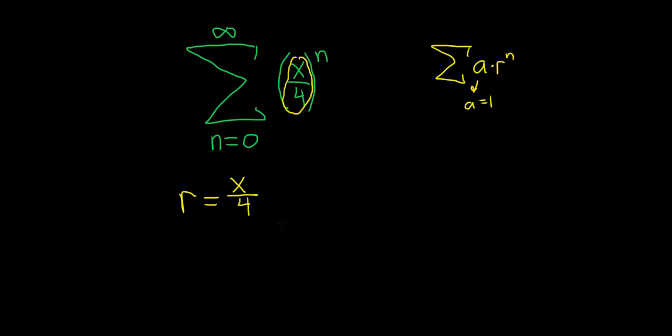And we know from the geometric series test that this will converge when the absolute value of r is less than 1. So now all we do is replace r with x over 4, and we know that this is when it converges.